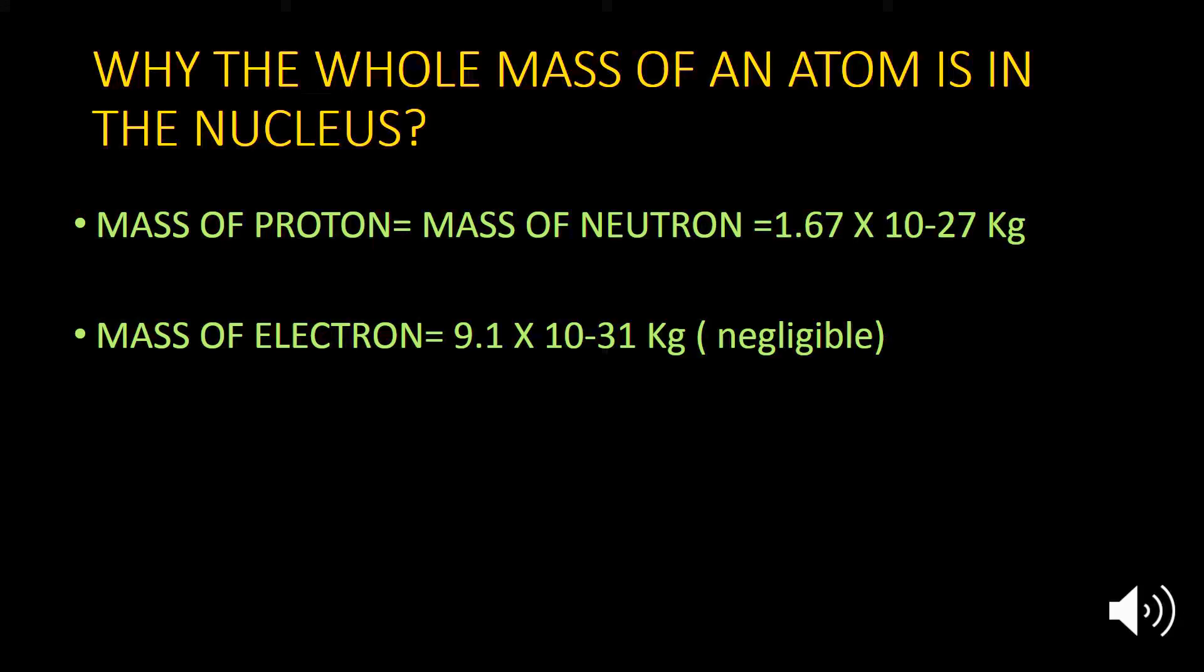Why the whole mass of an atom is in the nucleus of an atom? The proton and the neutron are the heavy particles of an atom which are present inside the nucleus and have a mass equal to 1.67 × 10^-27 kilograms, whereas the electron has a negligible mass.